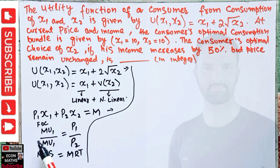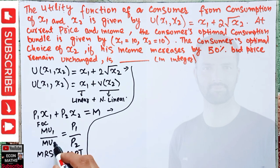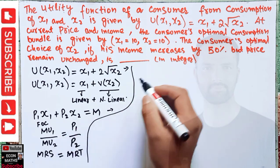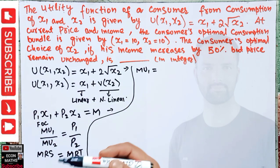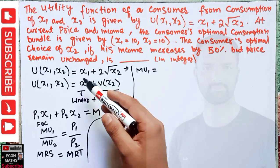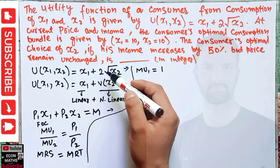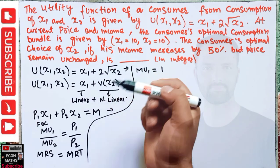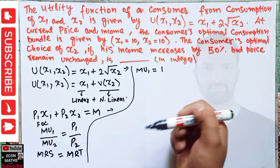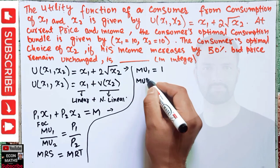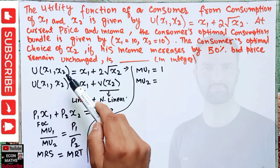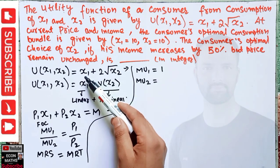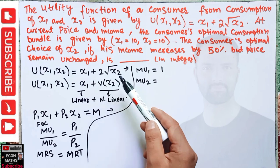We need to find the marginal utility of x1 and marginal utility of x2. Marginal utility of x1 is the derivative of the utility function with respect to x1. The derivative of x1 is simply 1, and since x2 is not involved in the first term, it is constant — so MU(x1) = 1. For MU(x2), we differentiate with respect to x2. The first term x1 has no x2, so its derivative is zero.